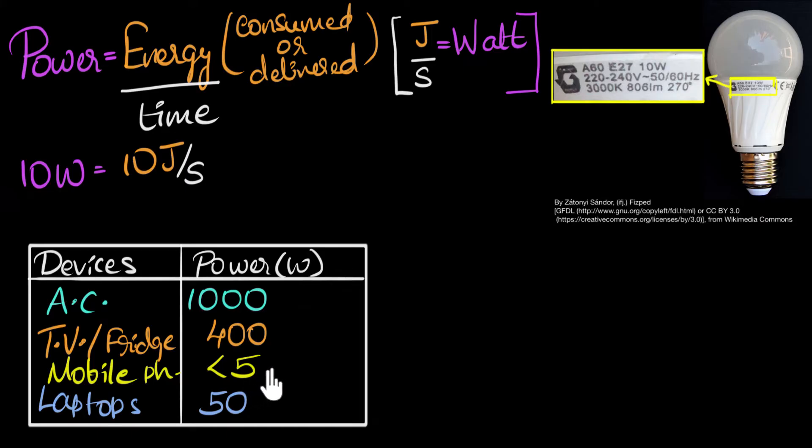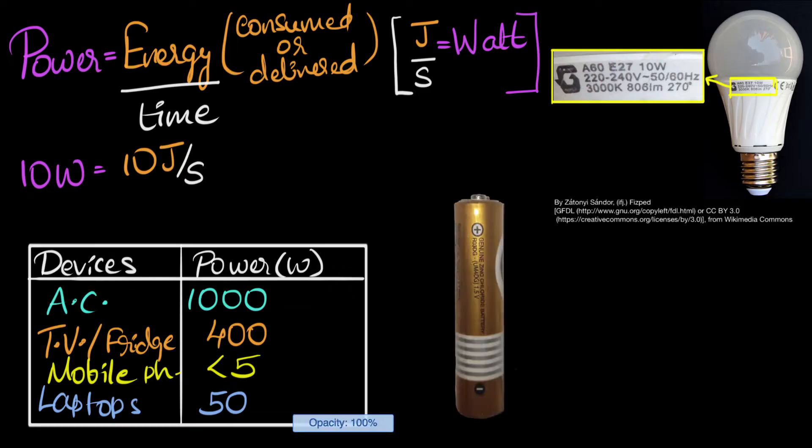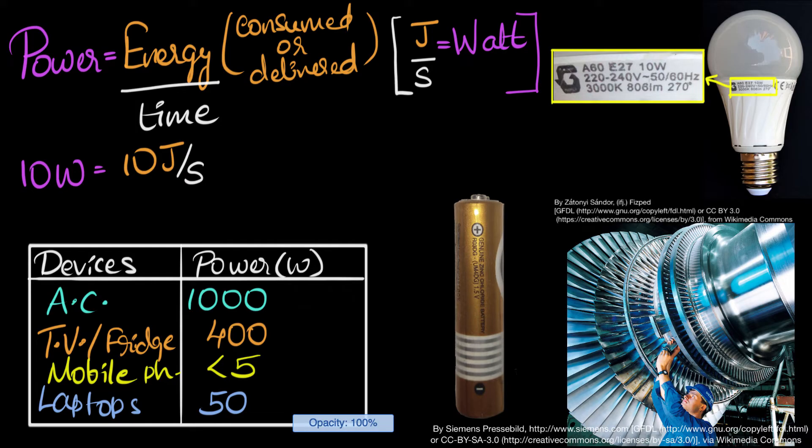Now, here's a question. Where do these energies come from? It has to come from somewhere, right? Well, you may guess that in mobile phones and laptops, these energies are delivered by the batteries. But in bigger circuits, like in our domestic circuits, then the energy is delivered by the large generators in the power stations.